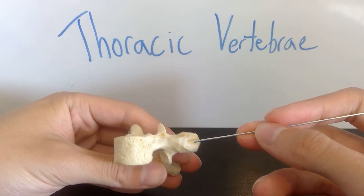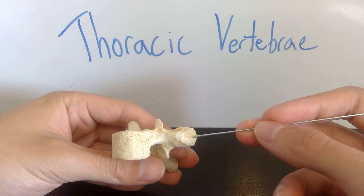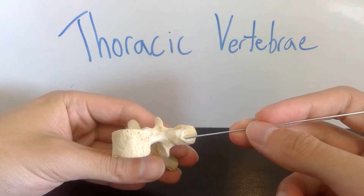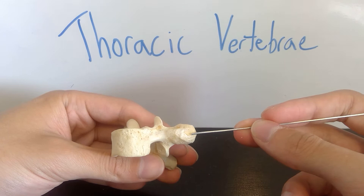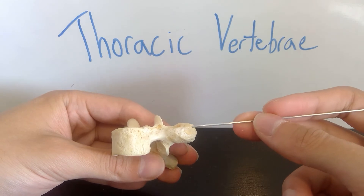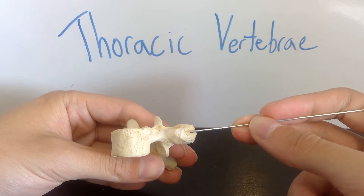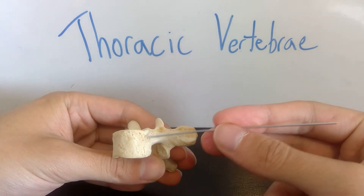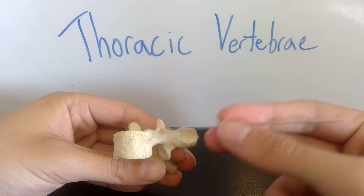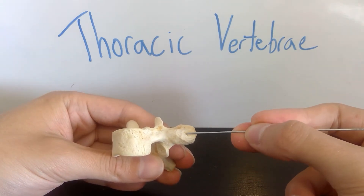Notably on the transverse process we have this huge divot here, and this is the costal facet. This is what articulates — make sure you write this down — with the tubercle of the same-numbered rib. So hypothetically if this was my T4 vertebra, this costal facet would articulate with the tubercle of rib 4.